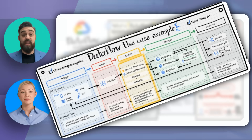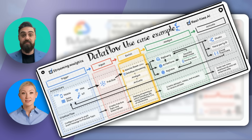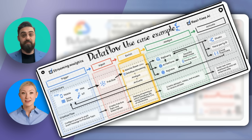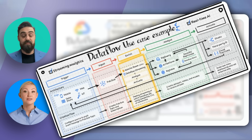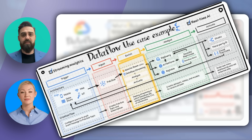You want to see Dataflow in action, right? Let's look at a real-world use case. Let's consider a streaming analytics use case. Imagine you have mobile and IoT data streams. Dataflow can ingest this data via Pub/Sub, enrich it with Apache Beam for data processing, analyze it using BigQuery, and activate real-time AI models using Cloud Functions. That's impressive. It seems like Dataflow can handle complex data workflows efficiently.